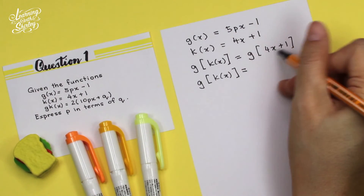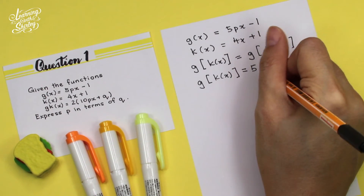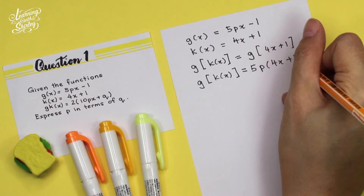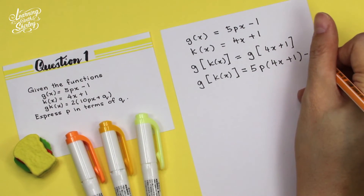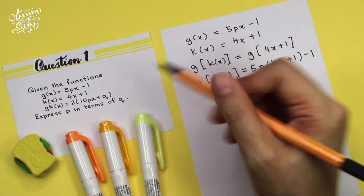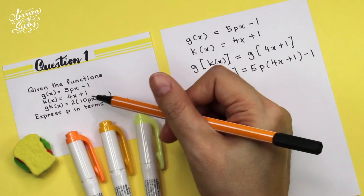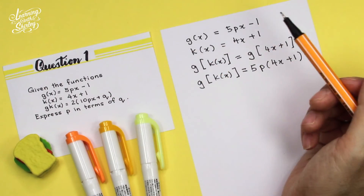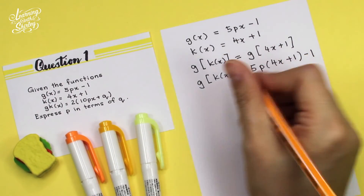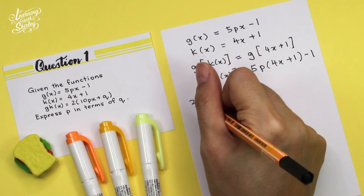I'm going to substitute 4x plus 1 into here, so it becomes 5P(4x plus 1) minus 1. Then looking back at the question, GK(x) is given as 2(10Px + Q), so I'm going to substitute this in so that we can compare the left side and the right side.